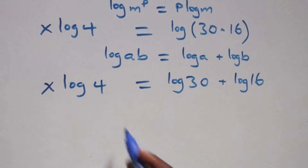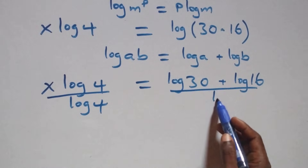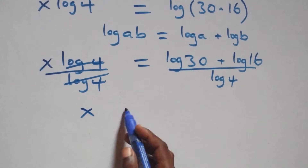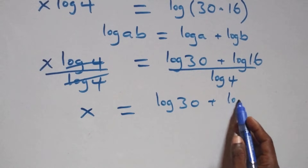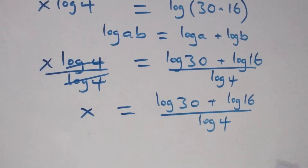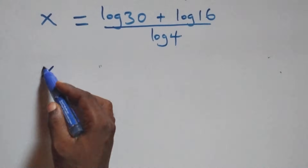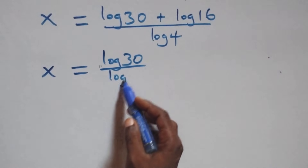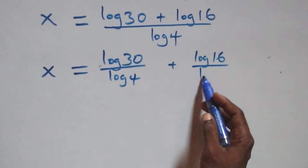This all becomes: x log 4 equals log 30 plus log 16. From here we divide both sides by log 4. The log 4 terms cancel, giving x equals log 30 plus log 16 over log 4. We then separate this into two fractions: x equals log 30 over log 4 plus log 16 over log 4.